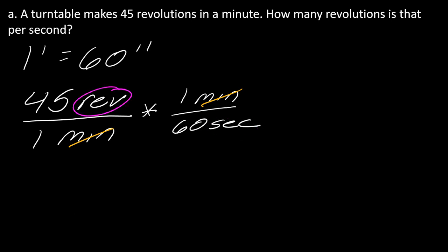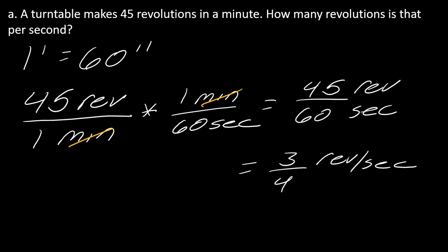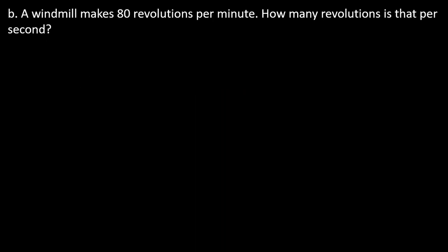If I finish this I get 45 revolutions per 60 seconds, and I just have to simplify that. This comes out to three-fourths of a revolution per second. That's how many revolutions in a second you get - three-quarters of a revolution.